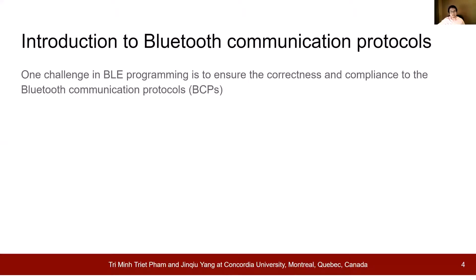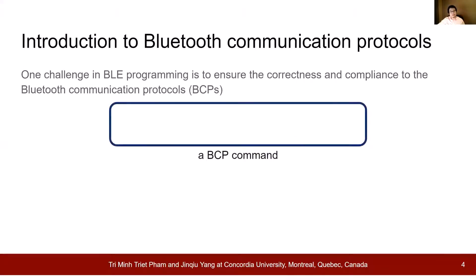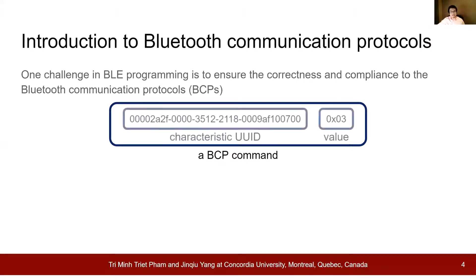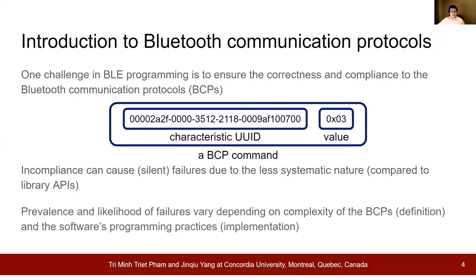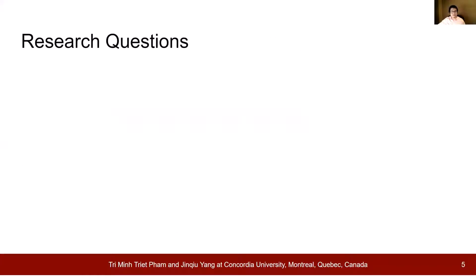One key challenge in BLE programming is to ensure correctness and compliance with defined Bluetooth communication protocols. Bluetooth communication protocols, BCPs for short, are defined as the set of all commands for one device. Each consists of one characteristic and one value. Non-compliance can cause silent failures due to the less systematic nature of BCPs compared to library APIs. As we are interested in detecting faults in BLE components before end-to-end testing, we take the first step to study BCPs to further reveal the challenges in utilizing BLE in IoT development.